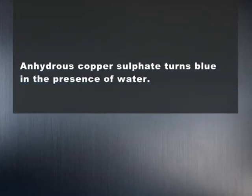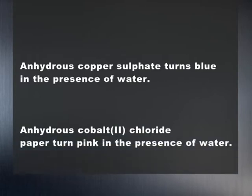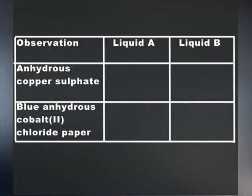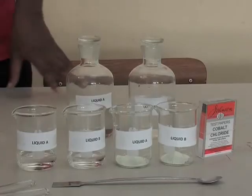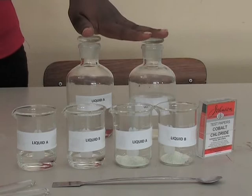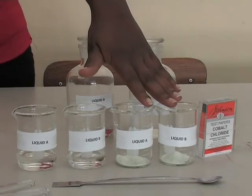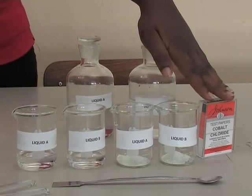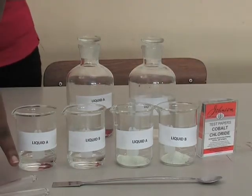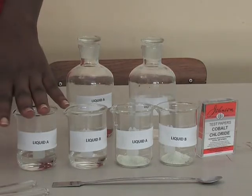If water drops are added to anhydrous copper sulphate, the copper sulphate will turn blue. If water drops are added to anhydrous cobalt-2 chloride paper, which is blue, the paper will turn pink. Jason, now you must draw new columns in your notebook for the chemical test of the two liquids with anhydrous copper sulphate and blue anhydrous cobalt-2 chloride paper. Here we have: two liquids A and B, white anhydrous copper sulphate, blue anhydrous cobalt-2 chloride paper, two medicine droppers, two small beakers marked A and B, and a spatula.